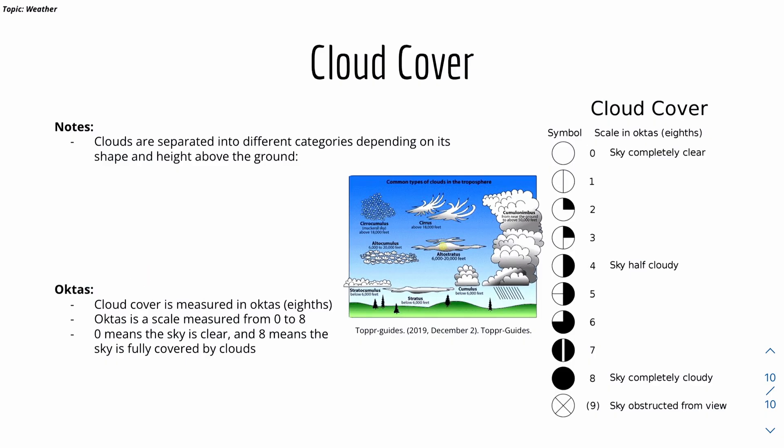Then we have cloud cover. It's measured in oktas or eighths. It's measured from a scale from zero to eight. We have zero, one, two, three, four, five, six, seven, eight. And nine is rarely used.